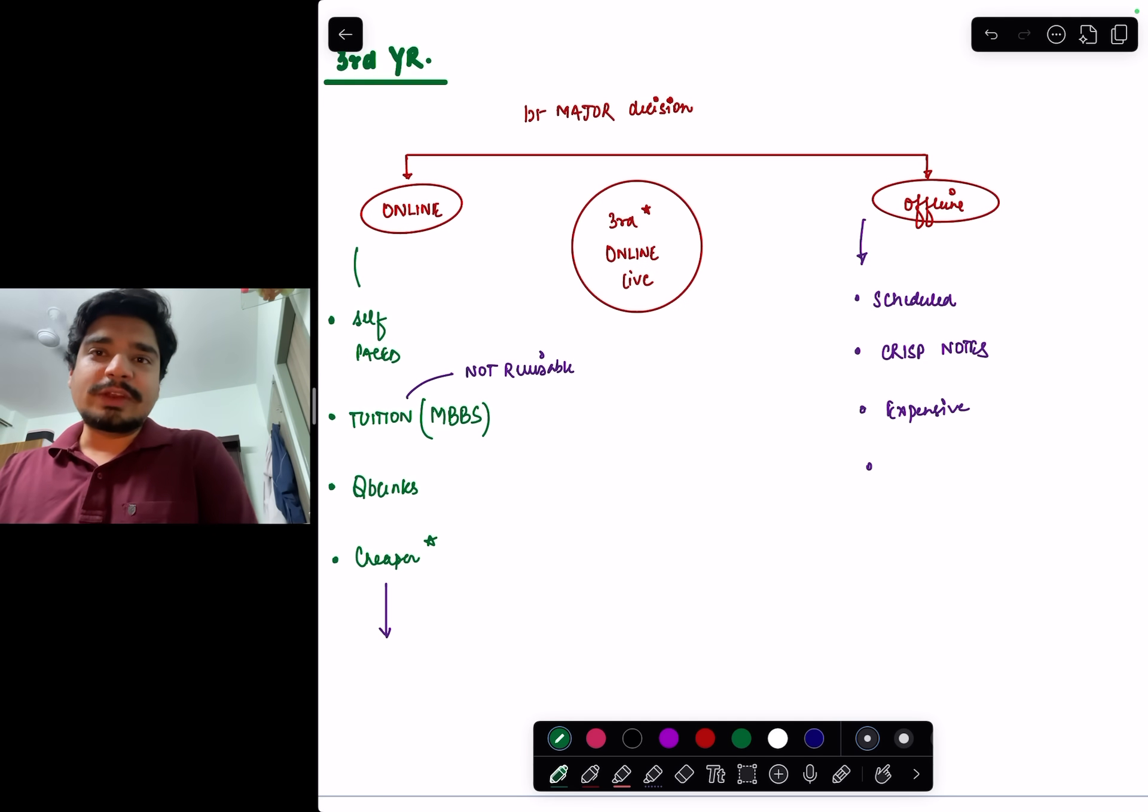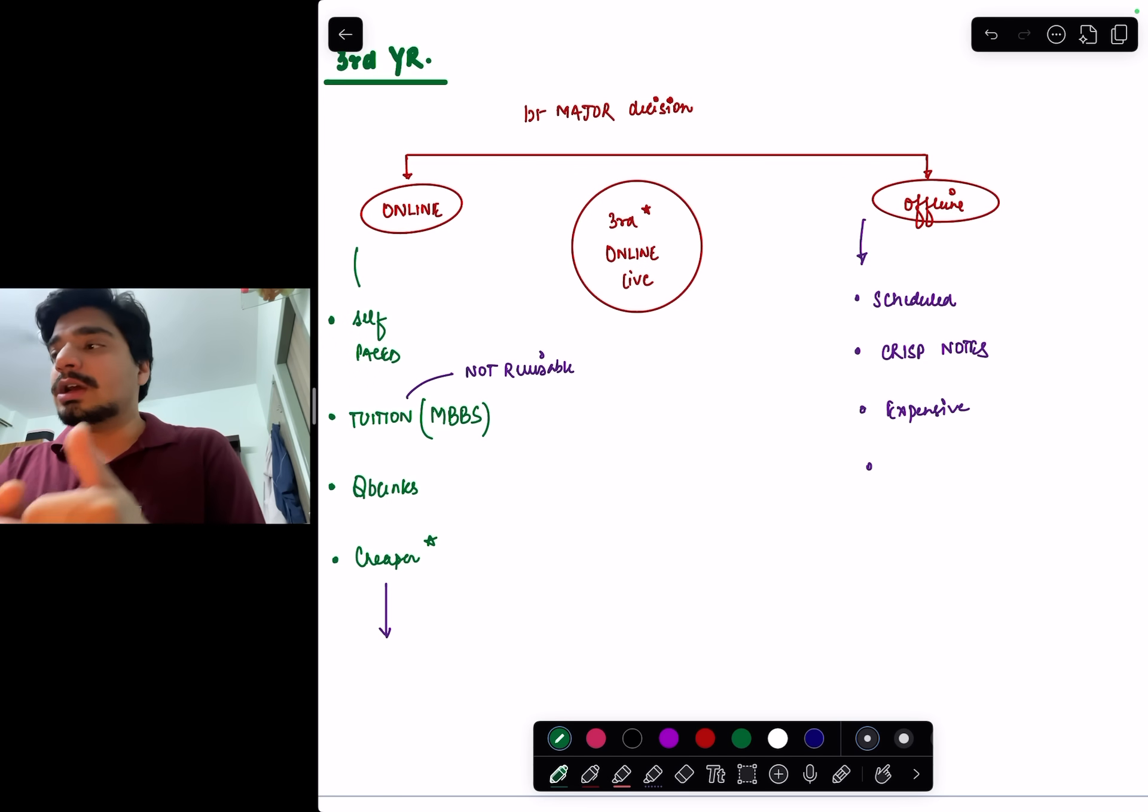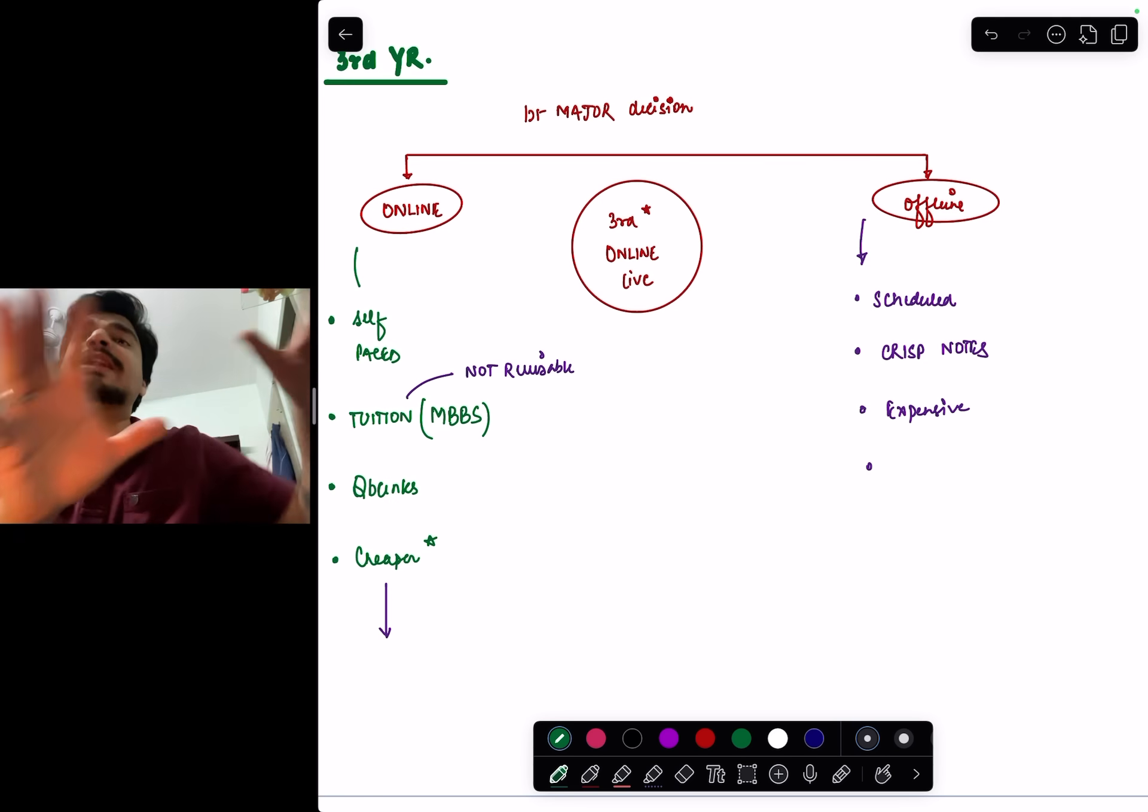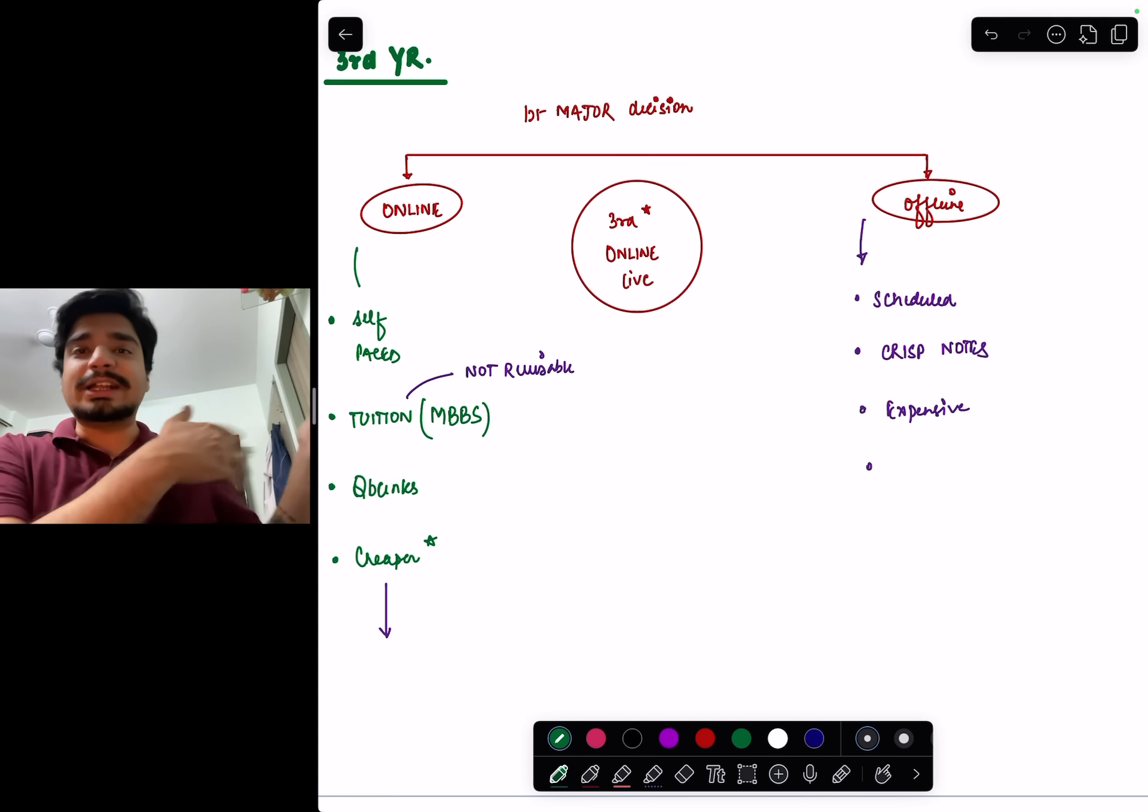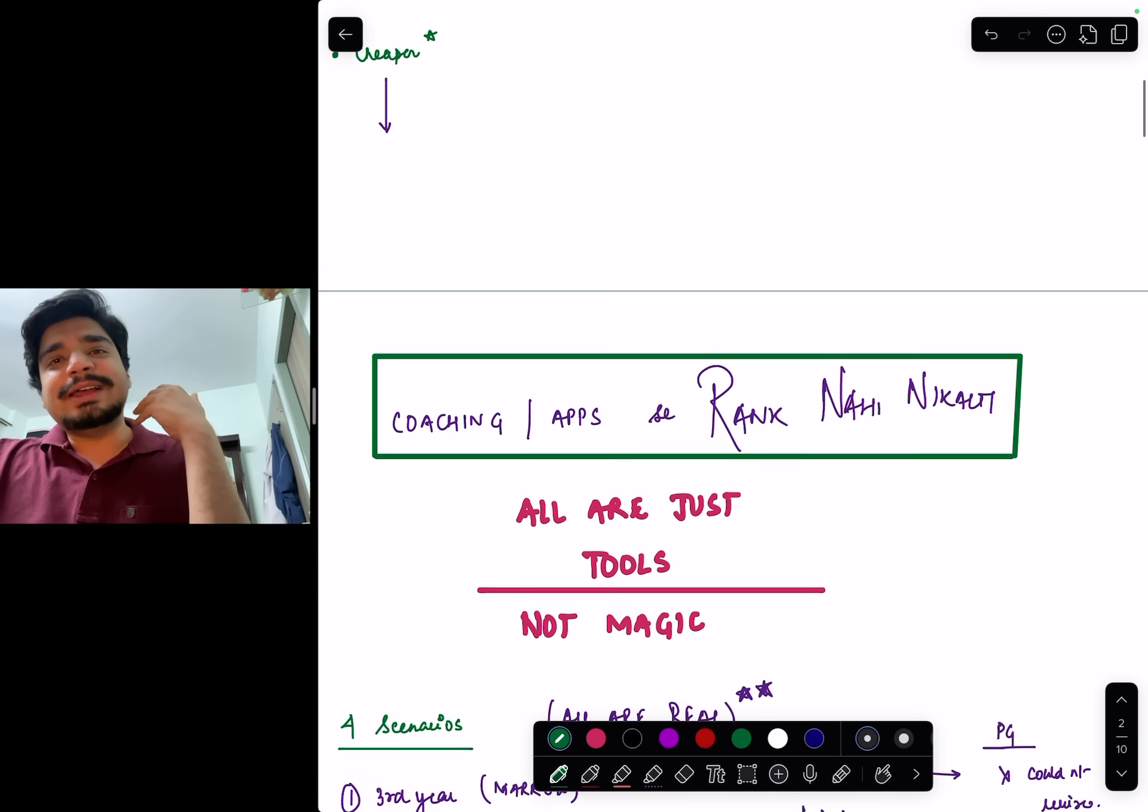That's where the advantage of offline coaching comes in. You'll be given material tailored for NEET PG from the very beginning. An online platform might be 40,000-50,000 versus offline at 70,000. That extra 20,000 rupees you're paying is for the effort that you would have done yourself. As a faculty, when I go for offline class, I've already done that effort and given you crisp, concise notes which are important for NEET PG and INICET purpose. You don't need to run around and create your own material. That's why you're paying that extra 15-20,000 rupees.